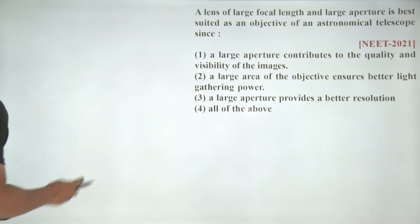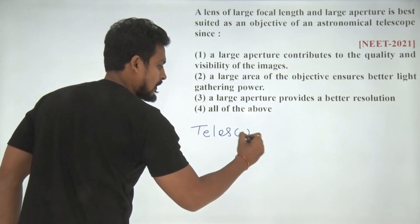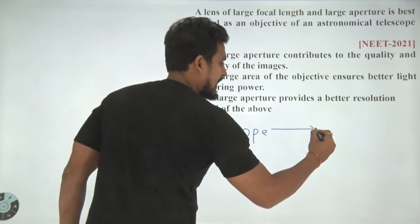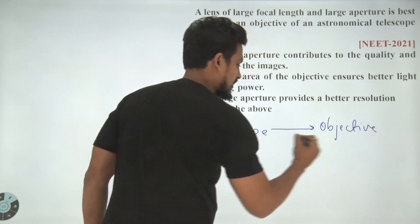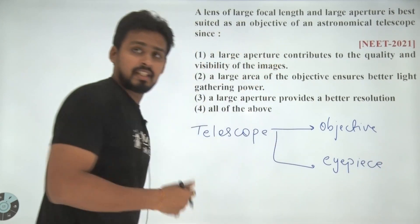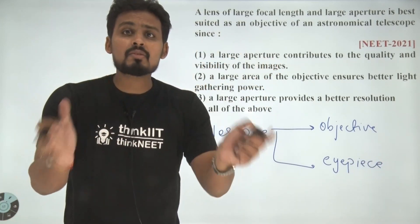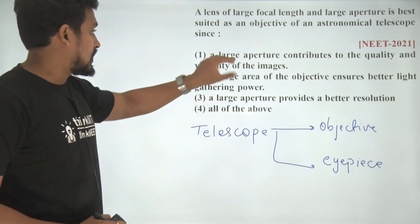In telescope what happens? We have objective lens and eyepiece, and in this case objective lens is much much larger when I compare it to eyepiece.